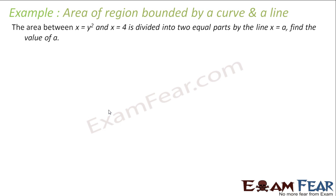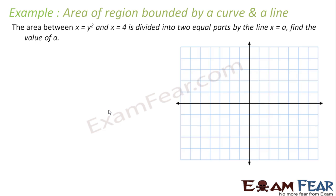Let us take one more example. This question is a little different — here we do not need to find an area. Instead, we are given the curve x = y² and the line x = 4, and we have to find the value of a for which the line x = a divides the area between the curve and x = 4 into two equal parts.